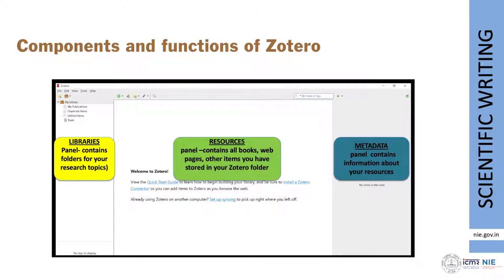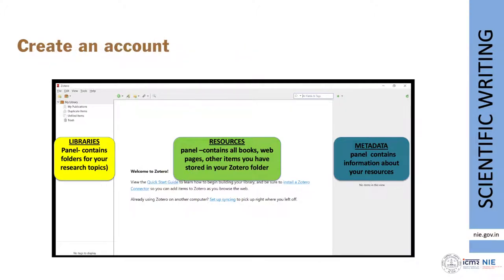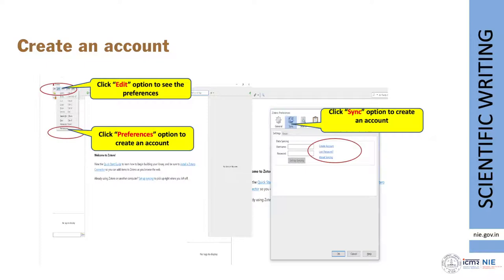The middle panel is called resources — it has all the relevant documents stored in your folder. The right side panel is called metadata — it contains information about your articles such as title, author details, publication year, and other relevant information. If you have not created your account, you can create it here or log in, which is useful to sync all your work online.